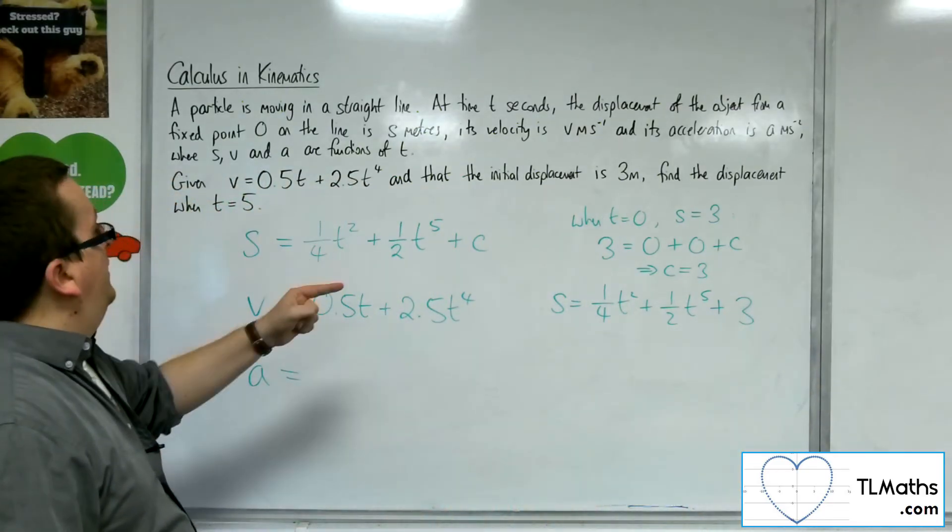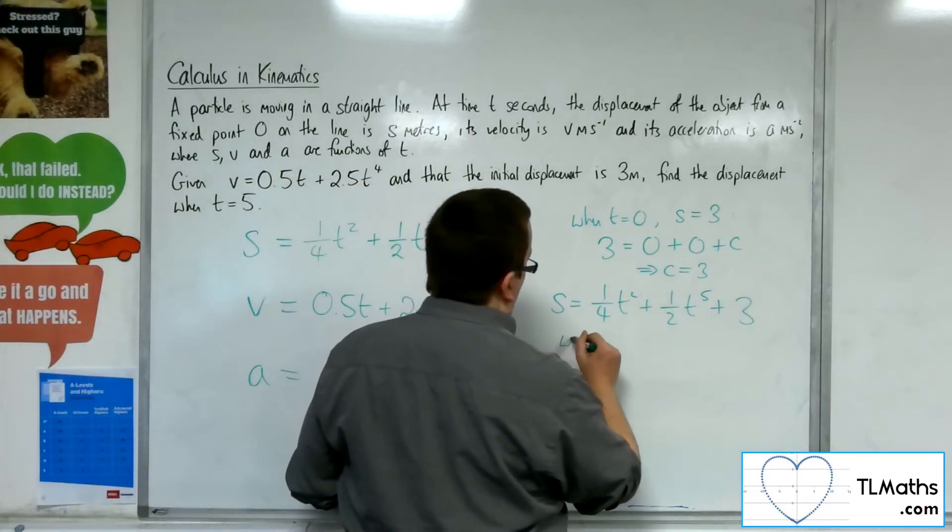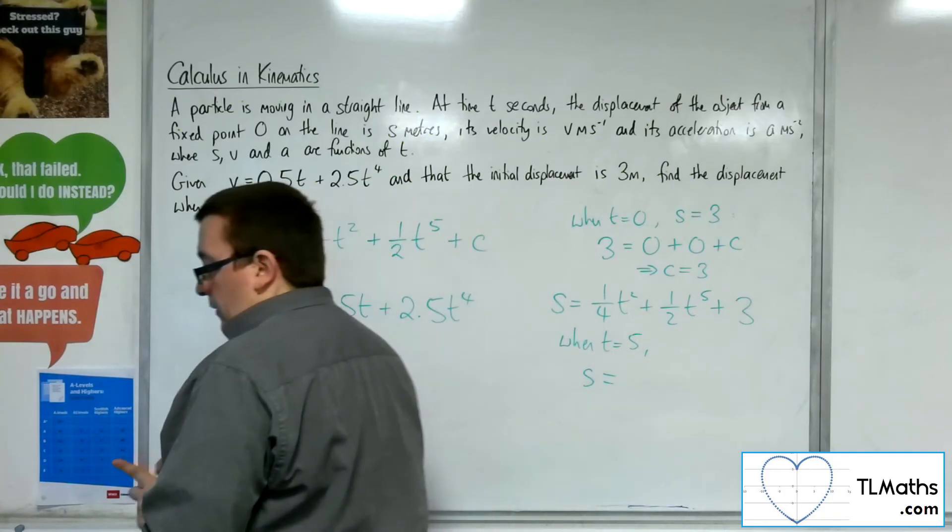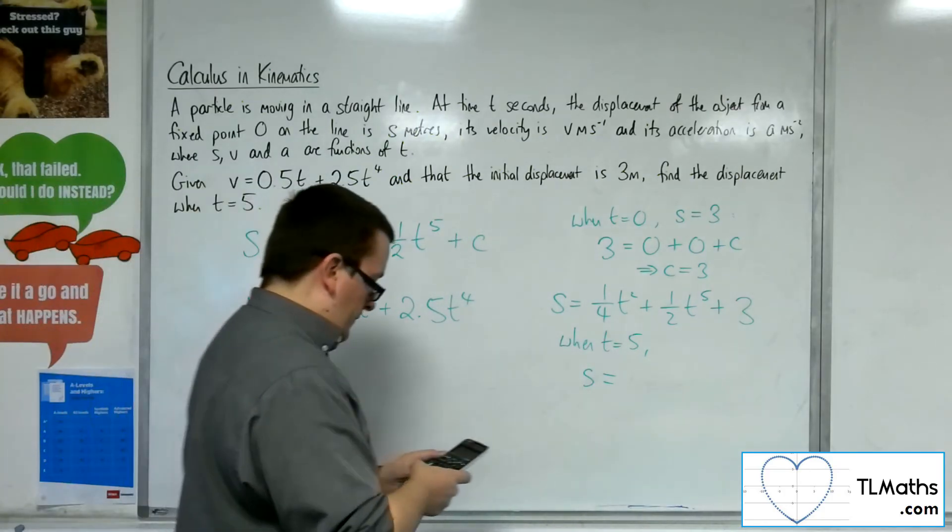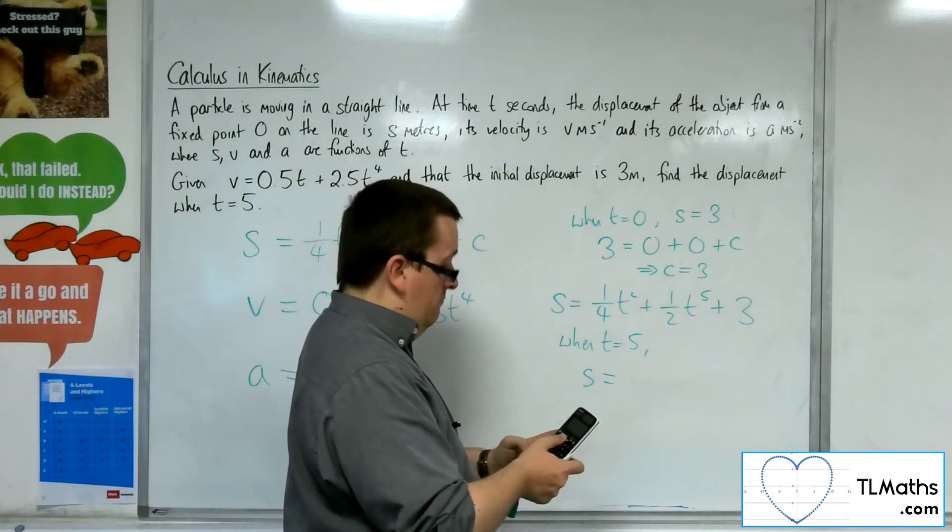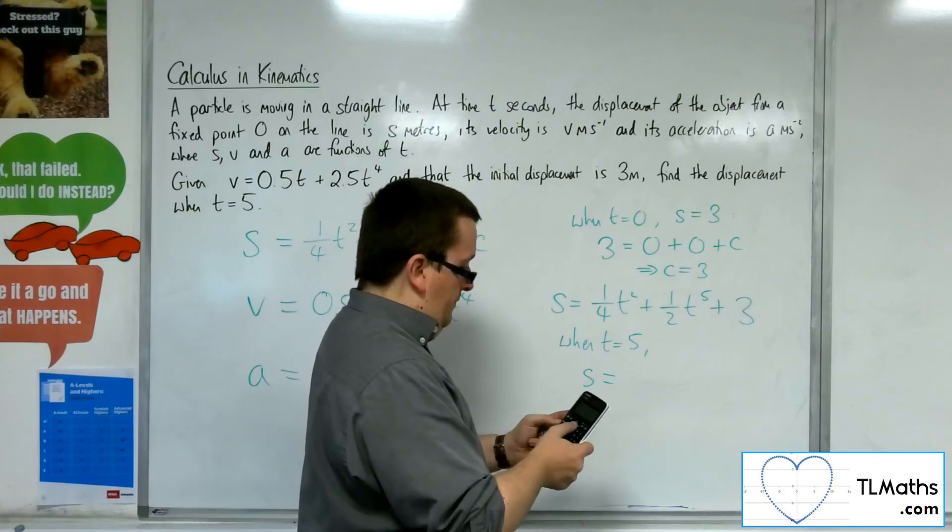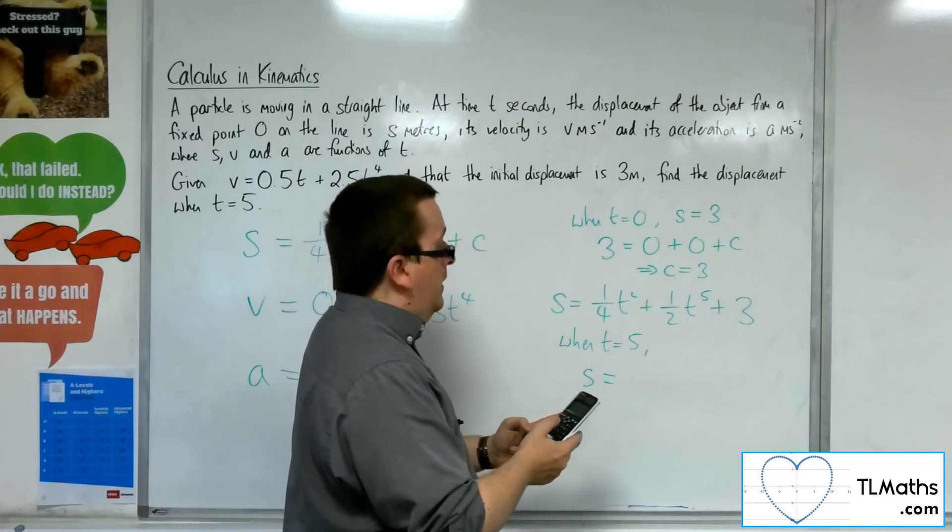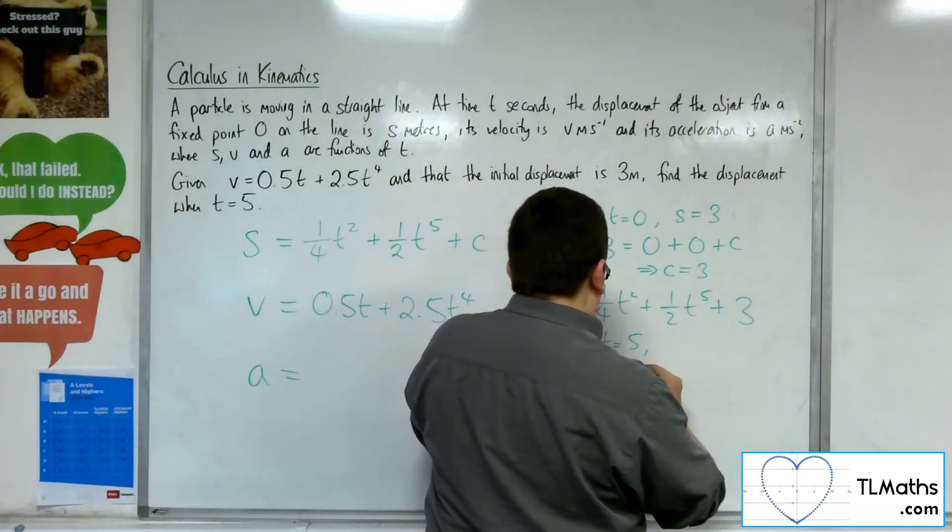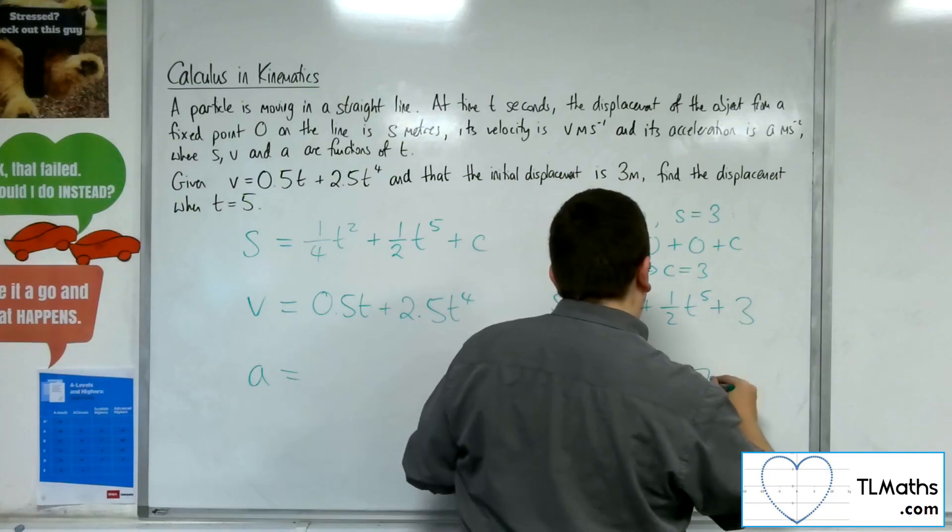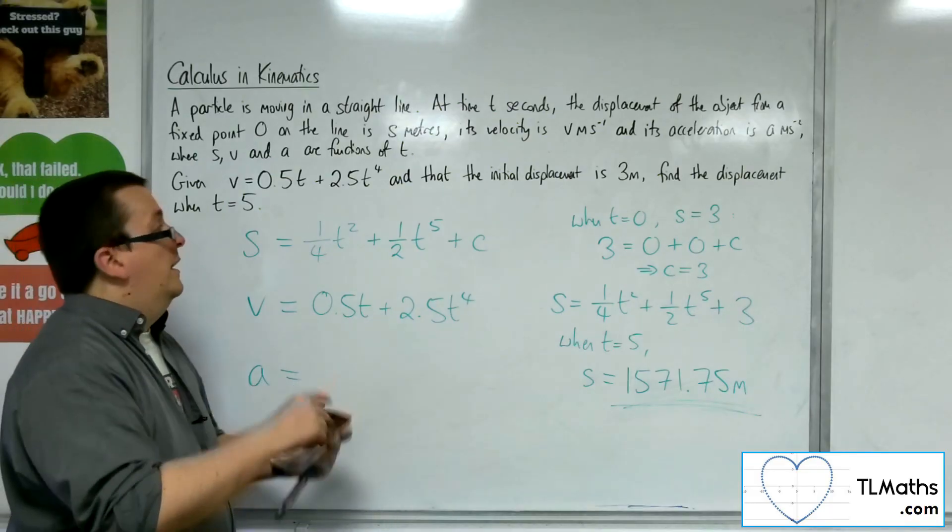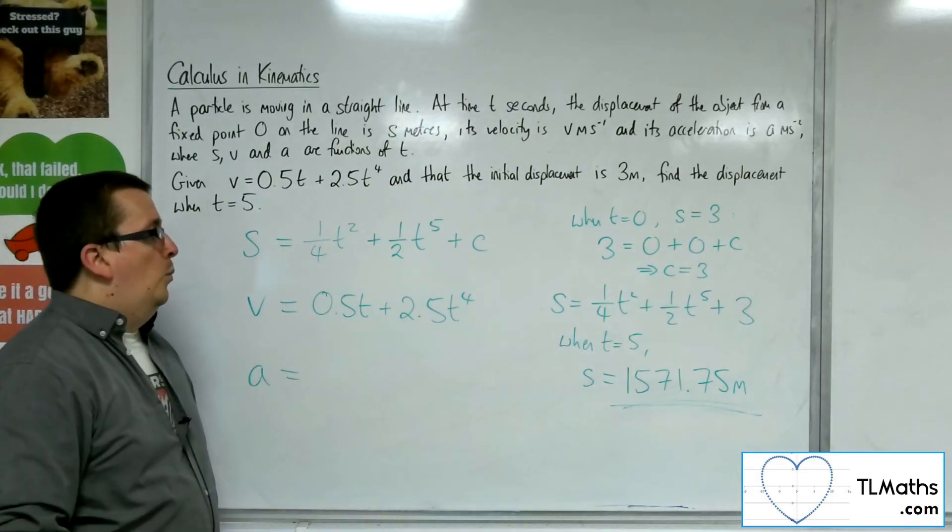So we want to find the displacement when t is 5. When t is 5, I need to substitute t equals 5 into my equation. So I've got 1 quarter times 5 to the 5 plus 1 half times 5 to the 5 plus 3, and I get 1,571.75 meters. And that is my displacement when t is 5.